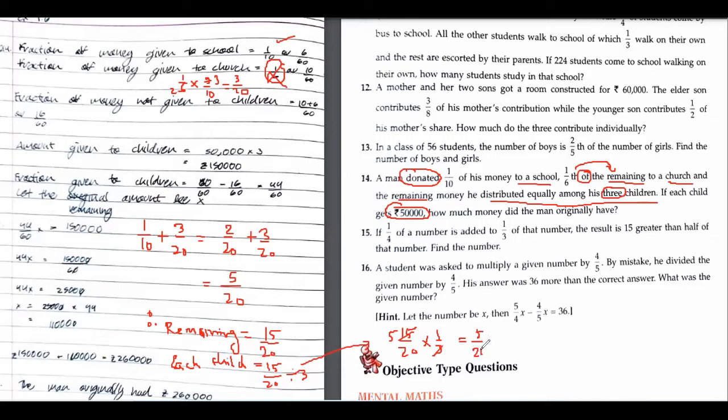Every child will get 5 upon 20 or 1 upon 4. Isn't it? Yes. And this value is represented by 50,000. Isn't it?